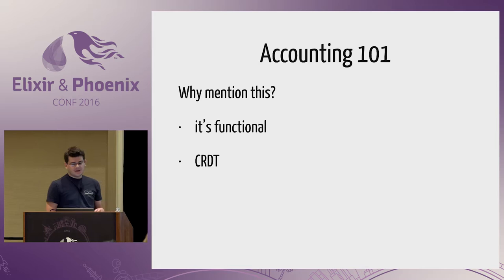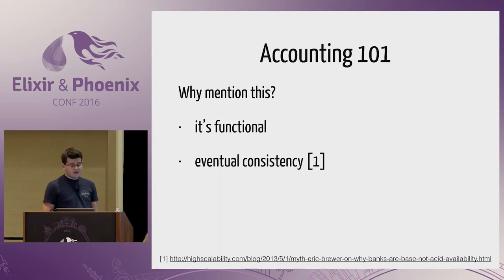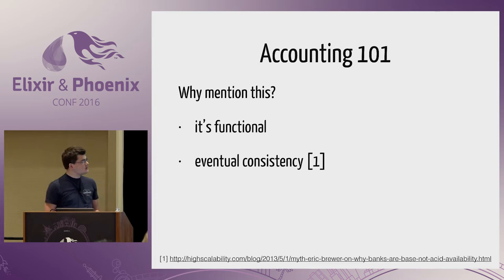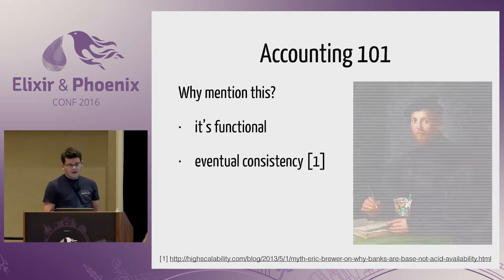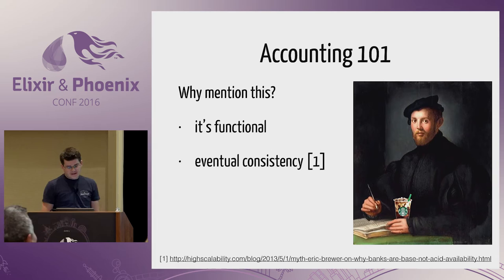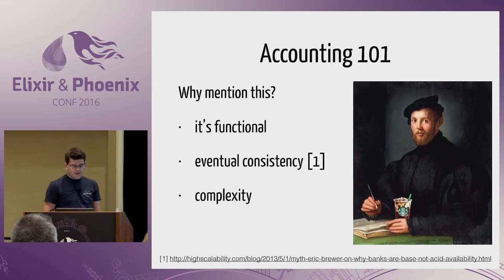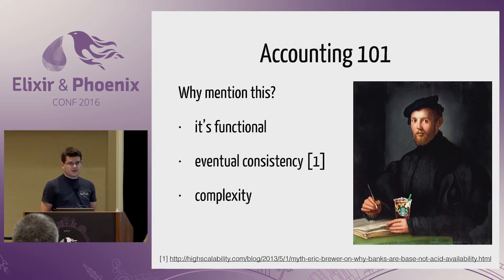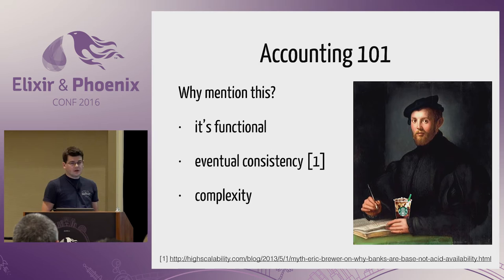There's an interesting article on the High Scalability website arguing that banking systems are not strictly consistent but actually eventually consistent — and this idea traces back to the Renaissance era. Florentine merchants 600 years ago were essentially using CRDTs before it was cool. More broadly, in most non-trivial applications there's always going to be essential complexity specific to your domain. It's very beneficial to separate it out so you can think about it in isolation, independent of details like the web layer.